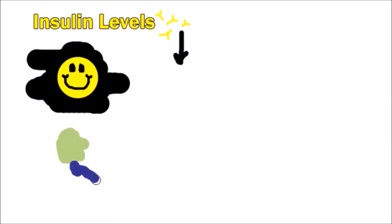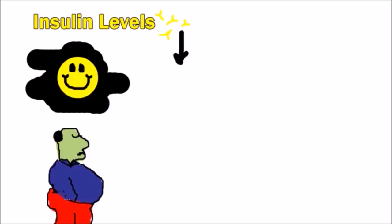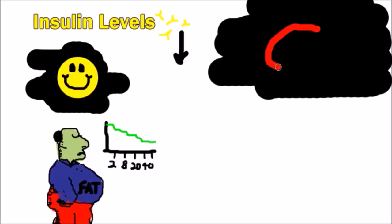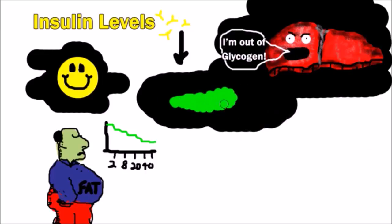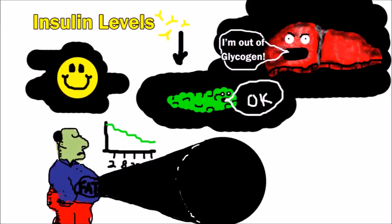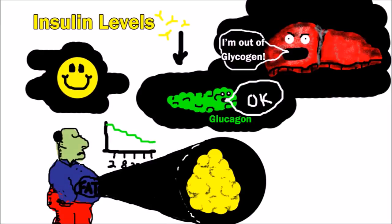In this stage, insulin levels are low, which is a good thing because insulin helps store fat in the body, which we like to minimize. When insulin and glucose levels are low, it causes the liver to send a message saying, I'm low on glycogen, which in response, the pancreas produces a molecule called glucagon.